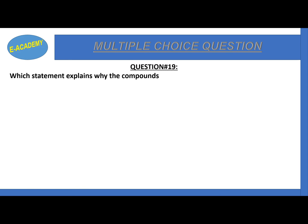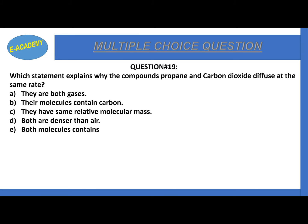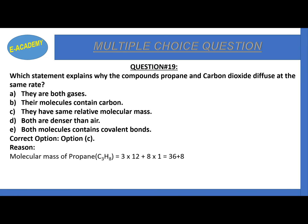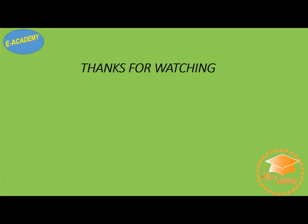Question 19. Which statement explains why propane and carbon dioxide diffuse at the same rate? They are both gases, both molecules contain carbon, they have the same relative molecular mass, or both are denser than air. The correct option is C: same relative molecular mass. Molecular mass of propane (C₃H₈) is 3×12 + 8×1 = 36 + 8 = 44 g/mol, and carbon dioxide is also 44 g/mol. That is why propane and carbon dioxide diffuse at the same rate.